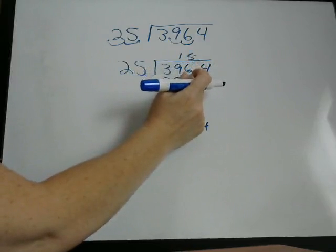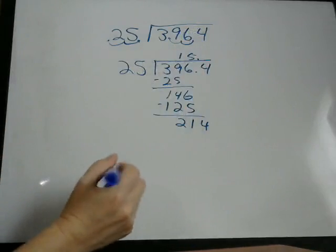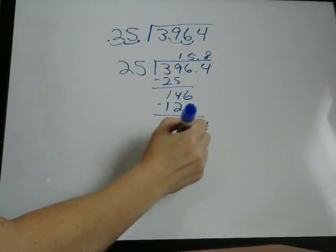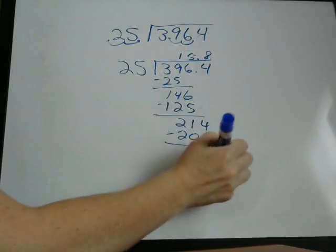25 into 214 goes eight times. Remember, now here's where our decimal is. So we bring it straight up in our answer. So we run into the decimal. 25 into 214 goes eight times. 8 times 25 is 200.